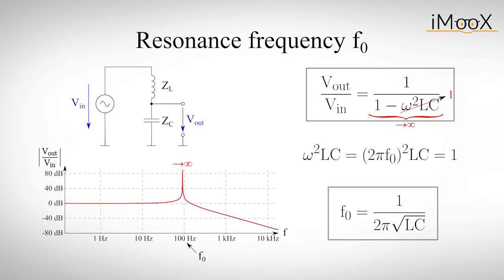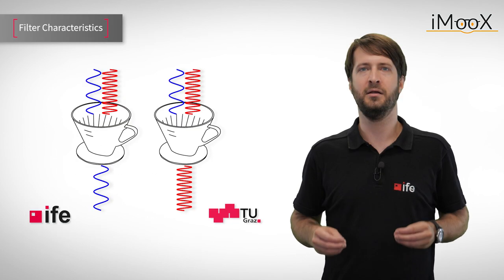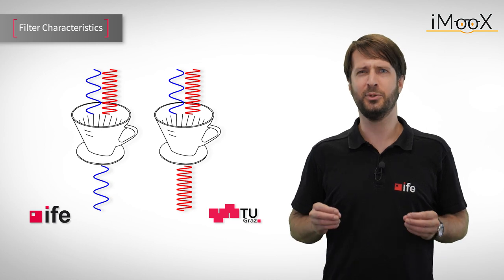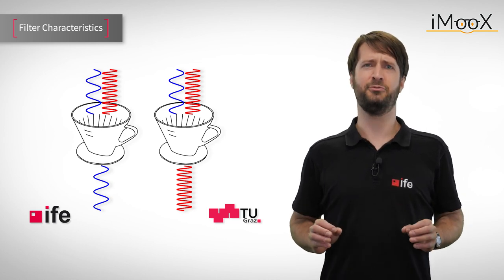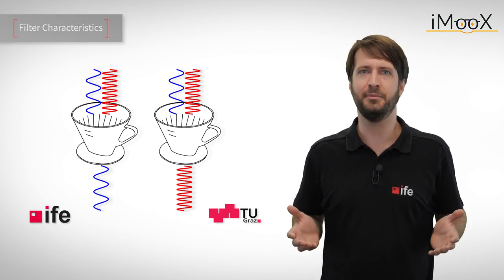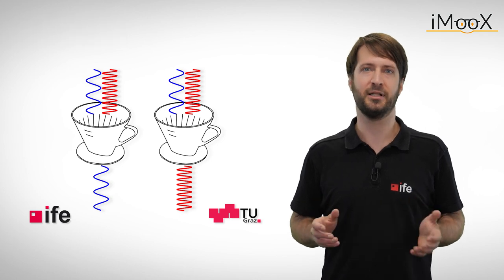To do so, we set omega squared times LC to one, and we get the frequency of one over two times pi times the square root of LC. But what happens here? Didn't we want our filter to dampen high frequency signals, not amplify them, much less reach values close to infinity?